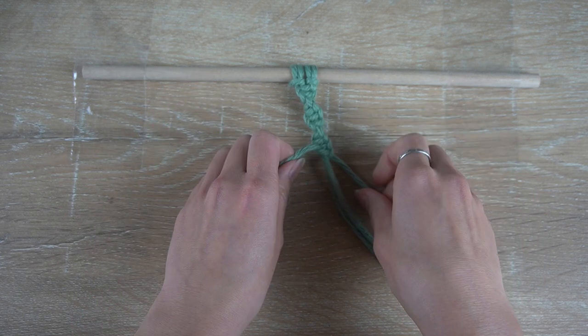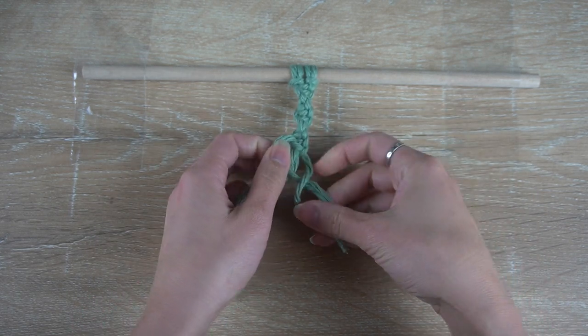Once you have made several half knots, you can see the spiral-like shape form.